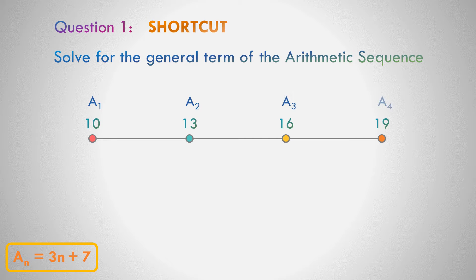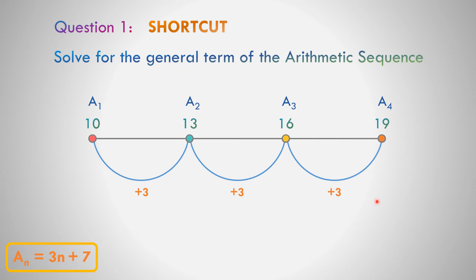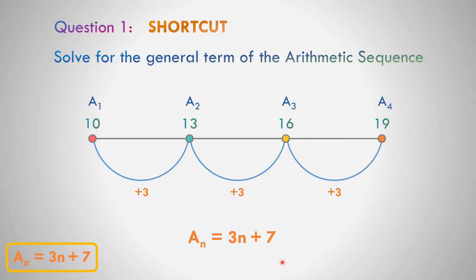What is the easiest way to identify the general term of the arithmetic sequence if the given is 10, 13, 16, and 19? Let us identify the common difference. The common difference from first up to the last term is equal to 3, because 13 minus 10 equals positive 3. So this is an arithmetic sequence, so a sub n is equal to the common difference, that is 3, times n. And what is the number before 10? So 10 minus 3, that is equal to positive 7. So the general term of the arithmetic sequence is a sub n is equal to 3n plus 7. That is the easiest way to solve the general term of the arithmetic sequence.